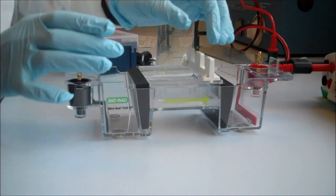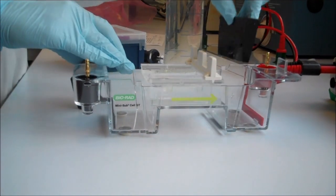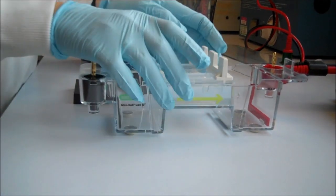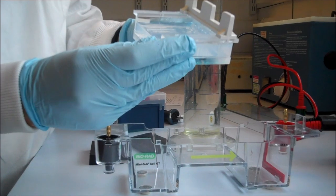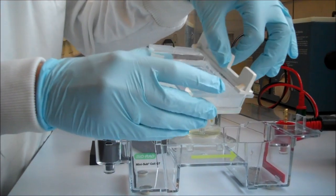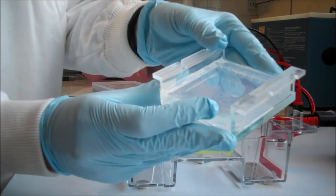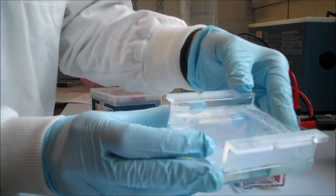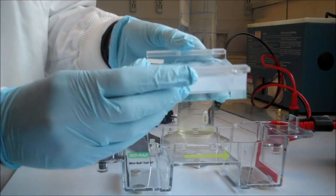Now that the gel is set, as you can see here, I can pull out the stoppers. You can see that it's a nice gelatinous solid. And I can also pull out the comb. And you can probably see here that there are these little wells in the gel and that's where I'm going to be putting the DNA.